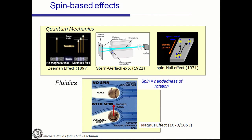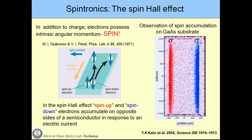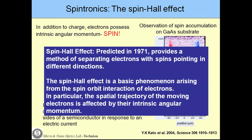In addition to charge, electrons possess intrinsic angular momentum, which is the spin. In 1971, Dyakonov and Perel published a very important paper about the spin Hall effect: applying an electric field upon a semiconductor results in a spin current in the transverse direction, which is a spin-dependent momentum shift or spin-dependent deflection of the spin-polarized electrons. Kato et al. observed it experimentally upon a gallium arsenide substrate. The spin Hall effect provides a method of separating electrons with spin up and down.